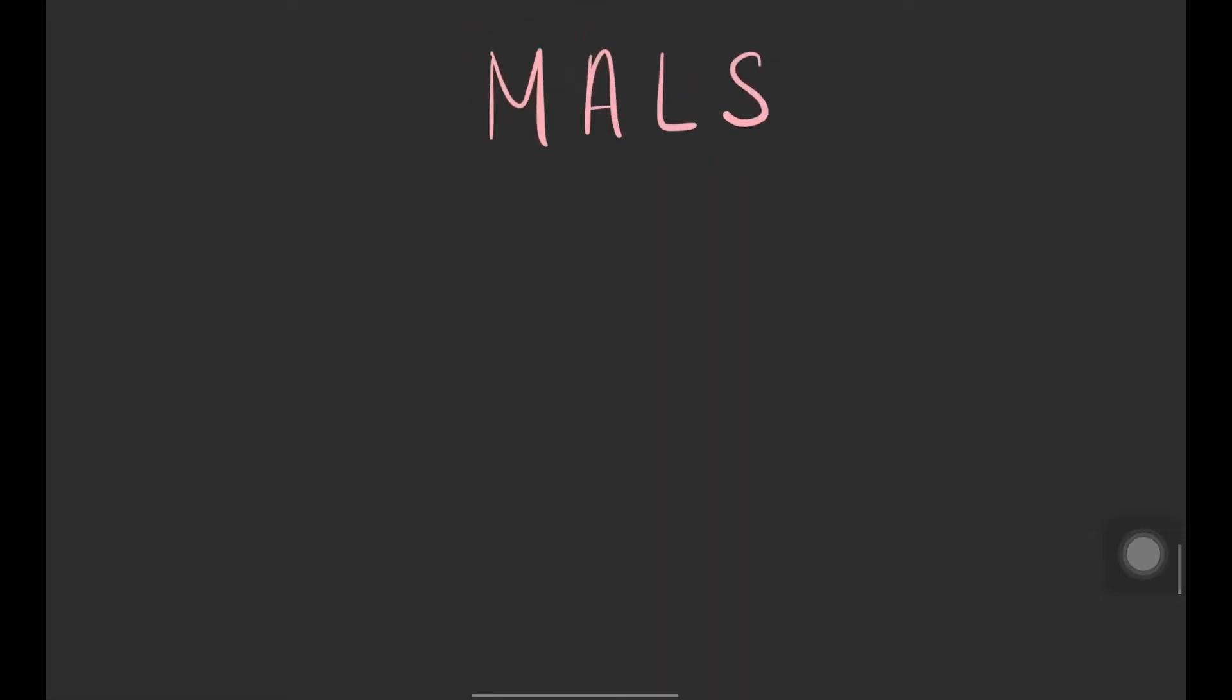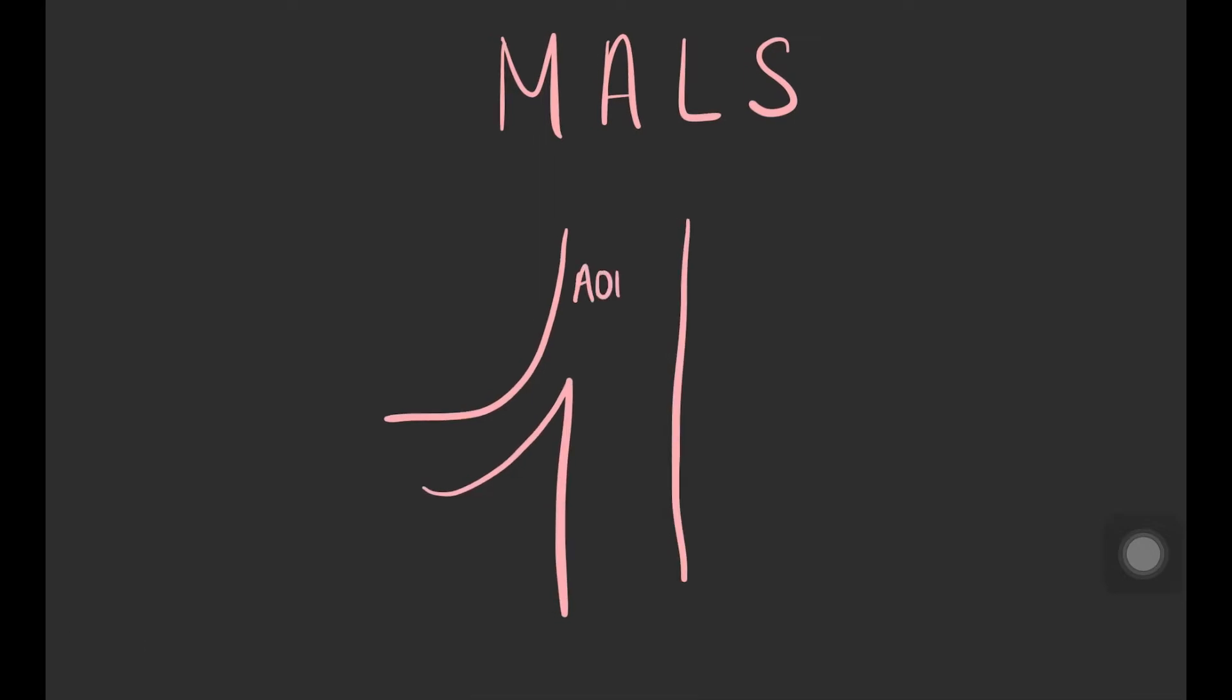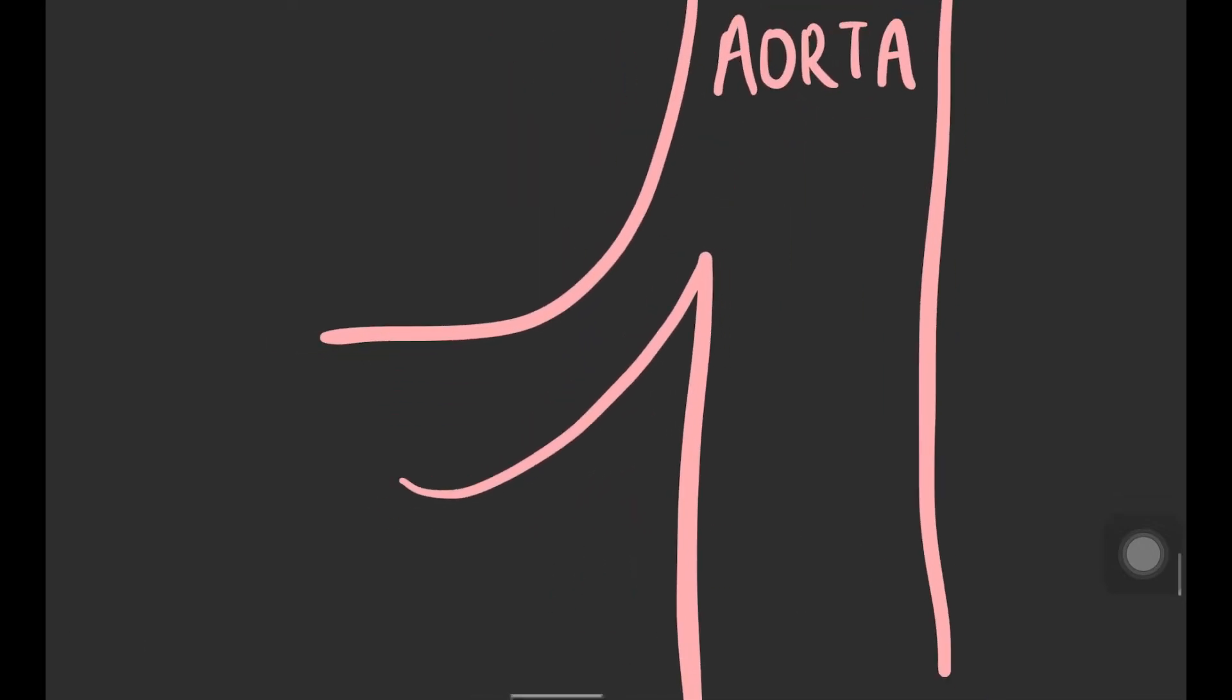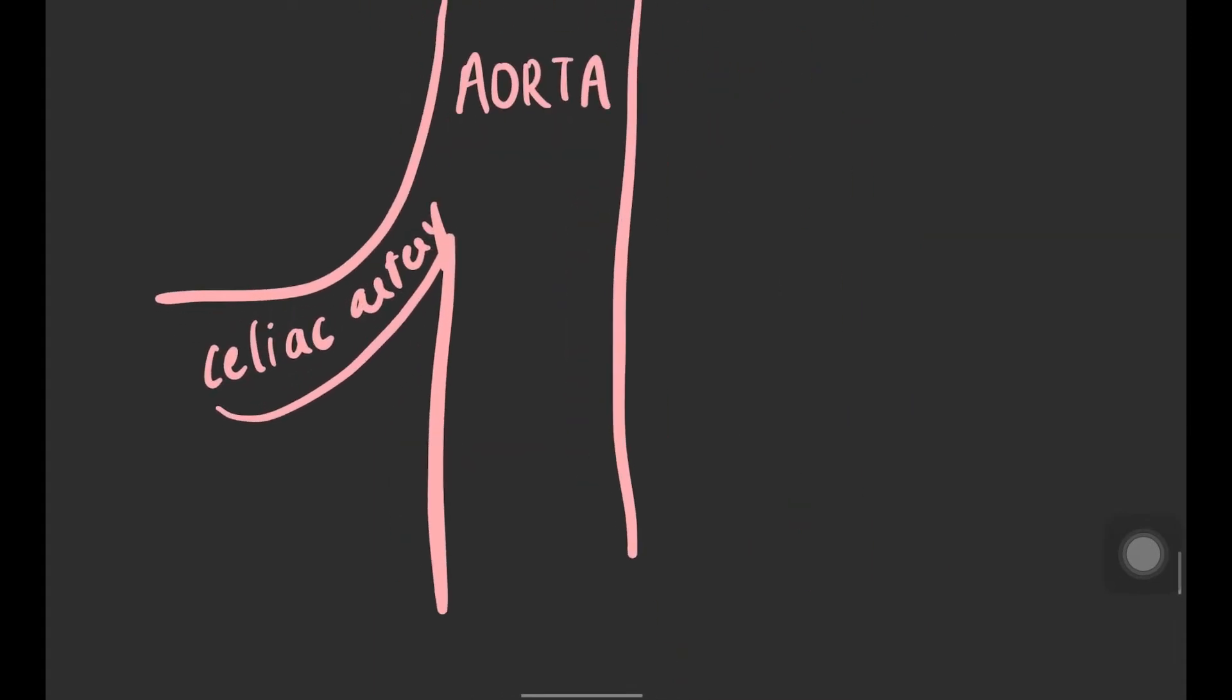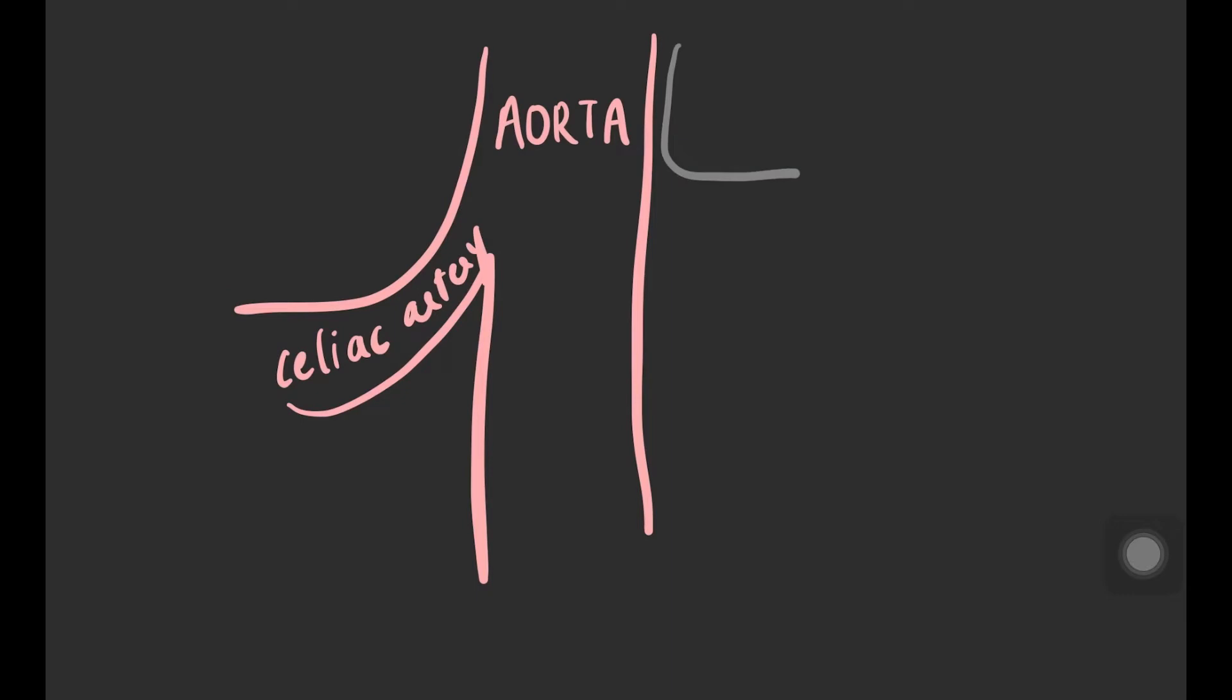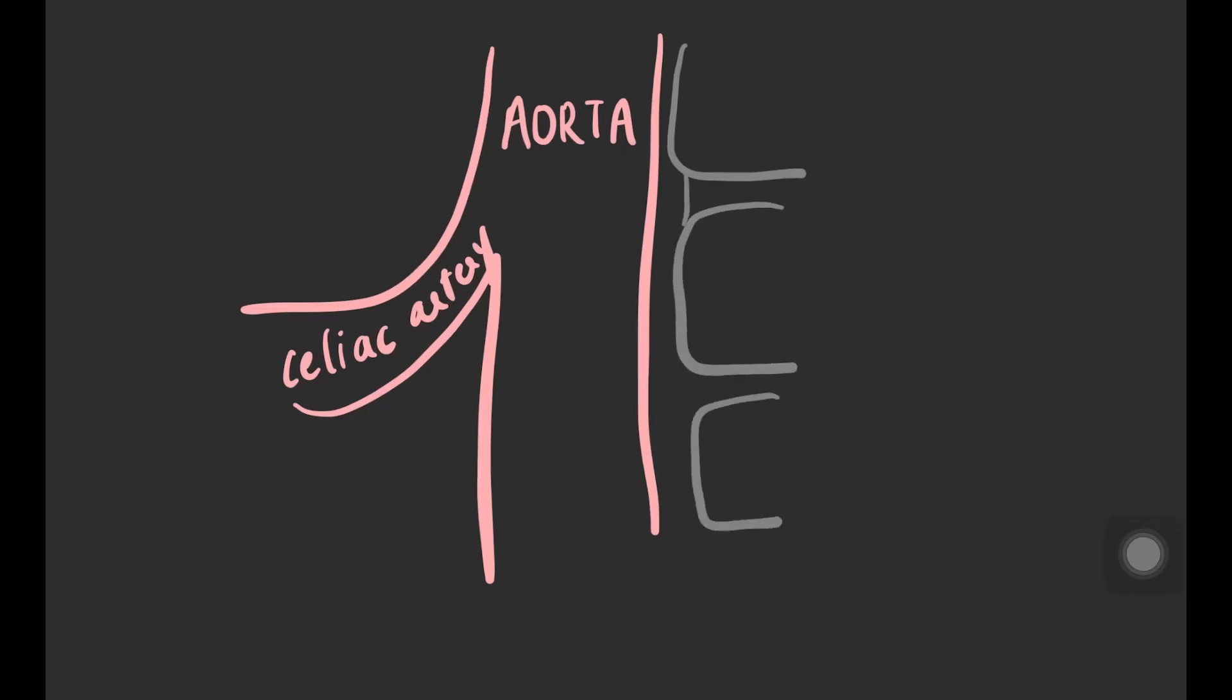Median arcuate ligament syndrome is due to abnormal anatomy of the median arcuate ligament. This ligament is a fibrous arch that forms the anterior border of the aortic hiatus of the diaphragm, surrounding the aorta.